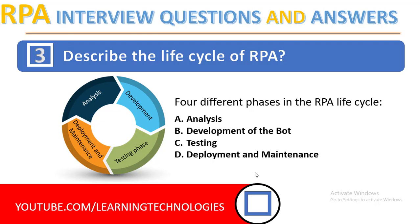Next question: describe the life cycle of RPA. There are four phases in the RPA life cycle: analysis, development, testing, and deployment and maintenance. In the analysis phase, the business team identifies the business process for which RPA development is needed, and the RPA architecture team works together to analyze the business process. In the development phase, the developer team starts working on developing automated workflows to fulfill requirements, similar to SDLC, to analyze quality and correct defects.